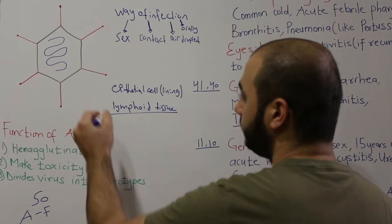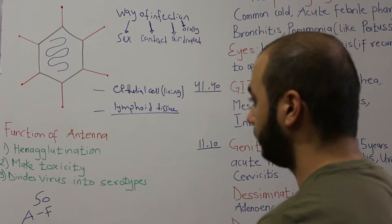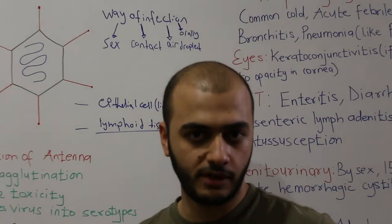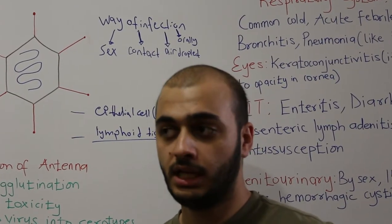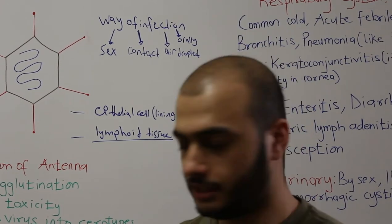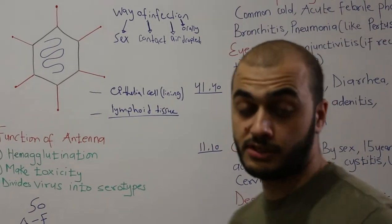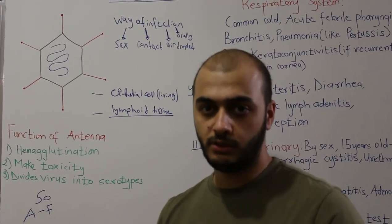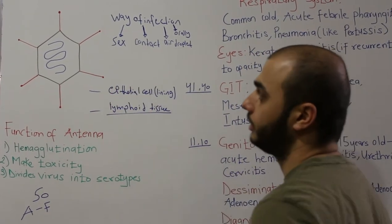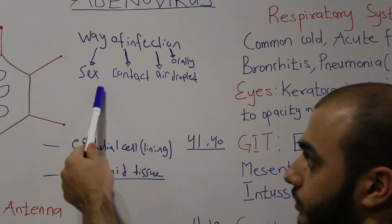To summarize: adenovirus has a tendency to infect the epithelium and a propensity to establish latency in lymphoid tissues. We acquire this virus during childhood. Actually, most — if not all — of us have antibodies against at least one of these serotypes, because this virus is ubiquitous.